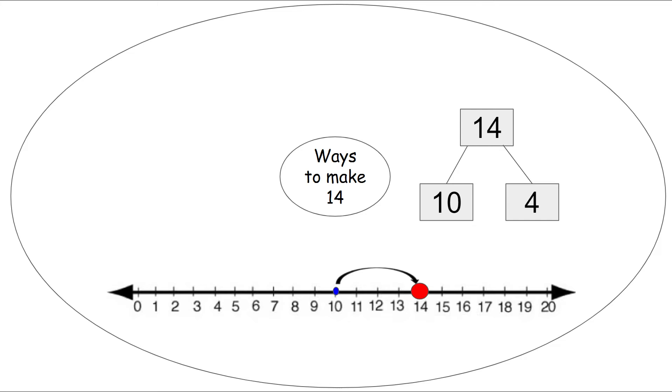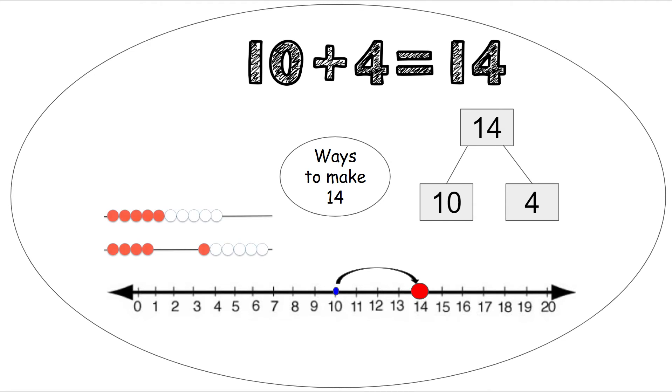We can also use our number line to show the number 14. We start on 10 and then we jump 4 times: 1, 2, 3, 4 to land on our red dot on the number 14. We can use a number sentence: 10 plus 4 equals 14. We can use our rekenrek. We would slide 10 over on the top and then 4 on the bottom. 10 and 4 more make 14.